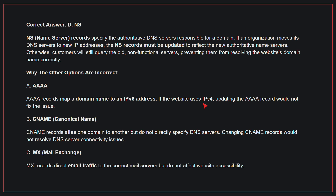Otherwise, customers will still query the old non-functional servers, preventing them from resolving the website's domain name correctly. Why the other options are incorrect? A, AAAA: AAAA records map a domain name to an IPv6 address; if the website uses IPv4, updating the AAAA record would not fix the issue. B, CNAME: CNAME records alias one domain to another but do not directly specify DNS servers; changing CNAME records would not resolve DNS server connectivity issues. C, MX: MX records direct email traffic to the correct mail servers but do not affect website accessibility. Therefore, the correct answer is D, NS.